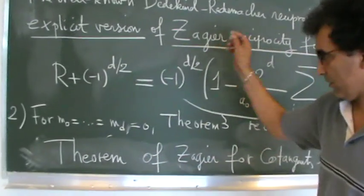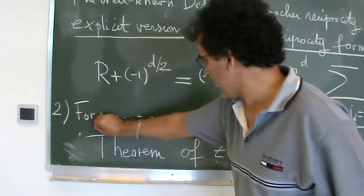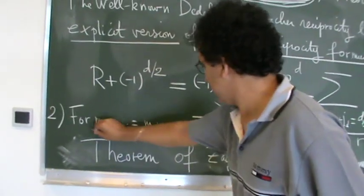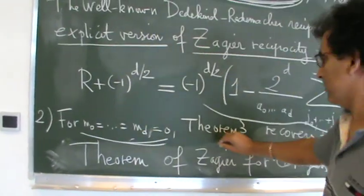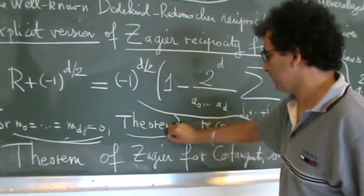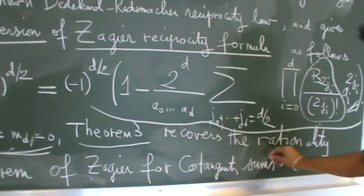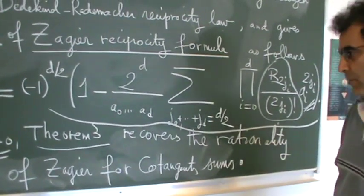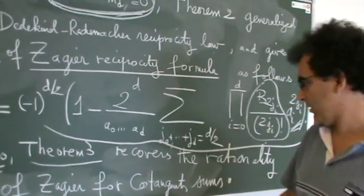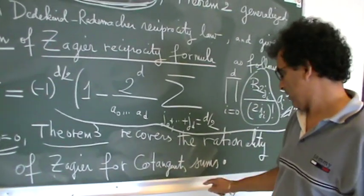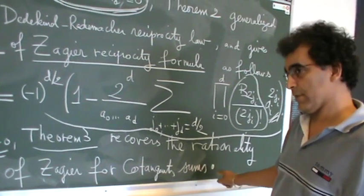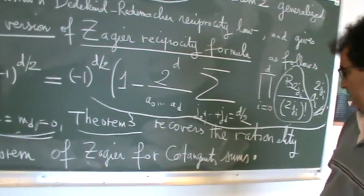Finally, in the same case, our theorem also recovers the rationality theorem of Zagier for cotangent sums.